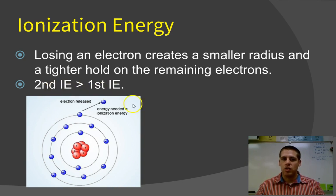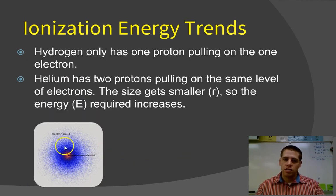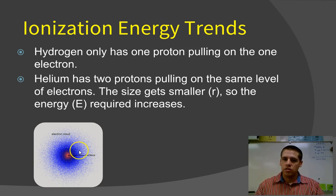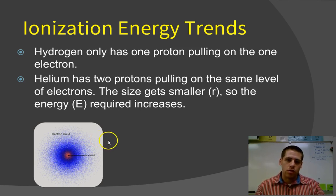Hydrogen, here's a picture with the cloud model. Hydrogen has one proton and one electron, and that proton and electron are attracted to each other. So the ionization energy for hydrogen would be the amount of energy required to remove that electron, and you would have just a proton left.